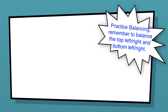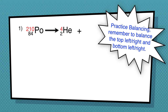Let's get some practice. For the first problem, on the top we need to find what plus 4 gives you 210. On the bottom, we have 84 on the left, so what plus 2 gives you 84? That's going to be the bottom number. Go ahead and work this problem out and we'll check the answer in a minute.